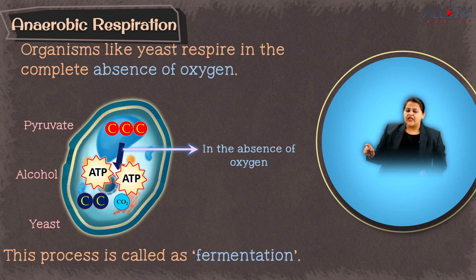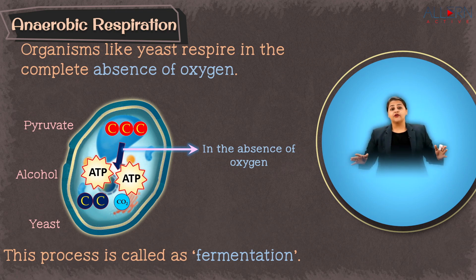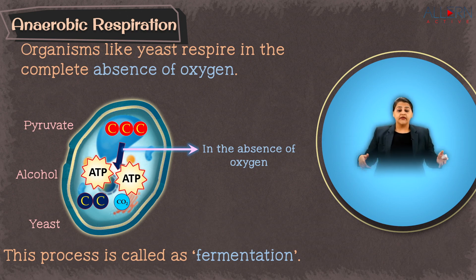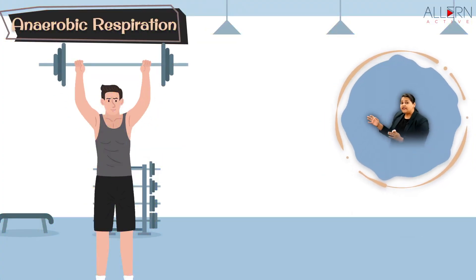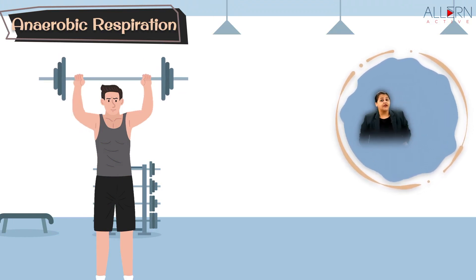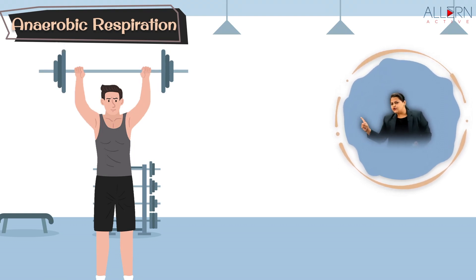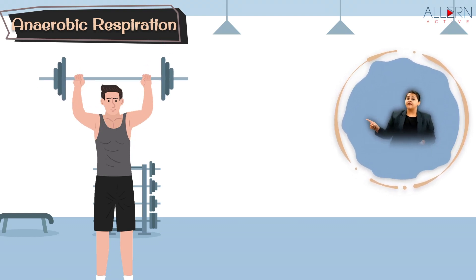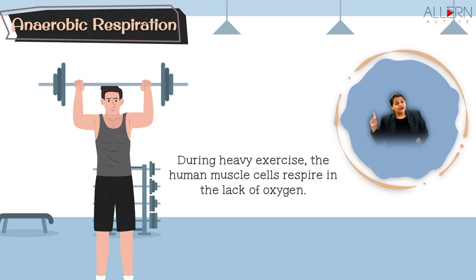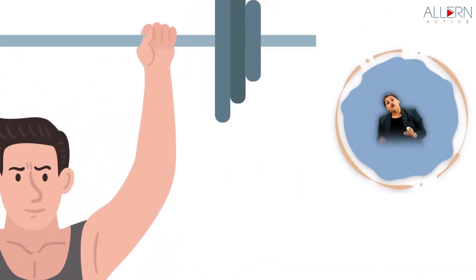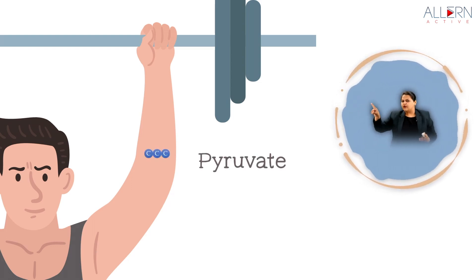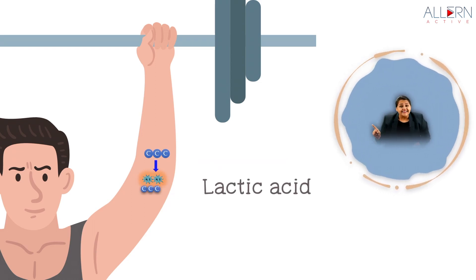Microorganisms perform anaerobic respiration, but do higher animals like us also perform it? Generally no, because we take in proper oxygen. But sometimes, when we are working vigorously — like this boy continuously using dumbbells for weight training — he is not breathing properly, and as a result his muscles will undergo a lack of oxygen. Initially they had oxygen, so they performed glycolysis and broke down glucose to pyruvate.